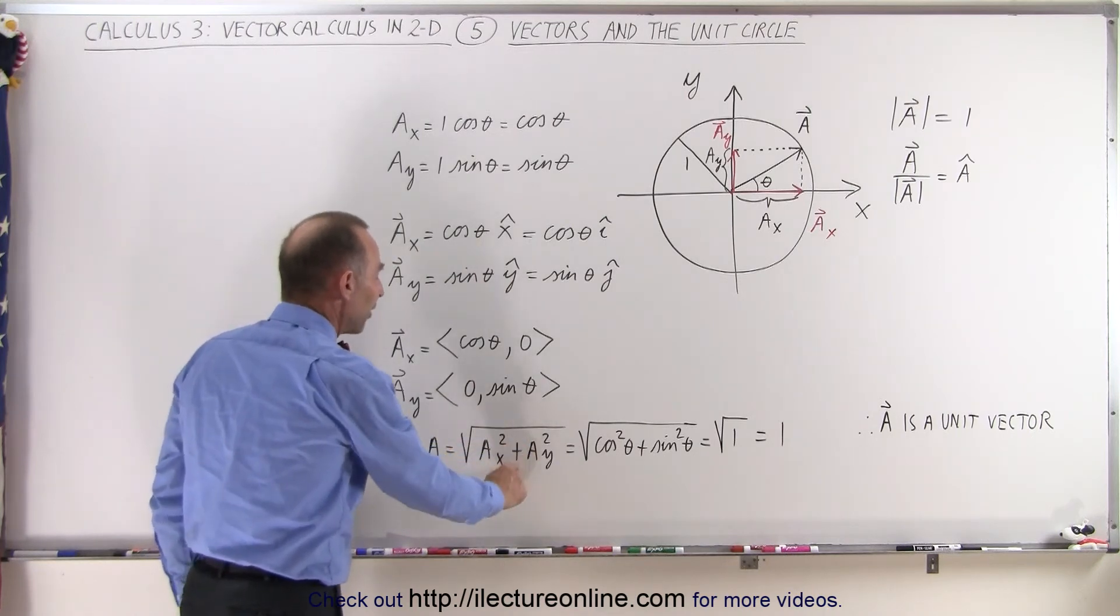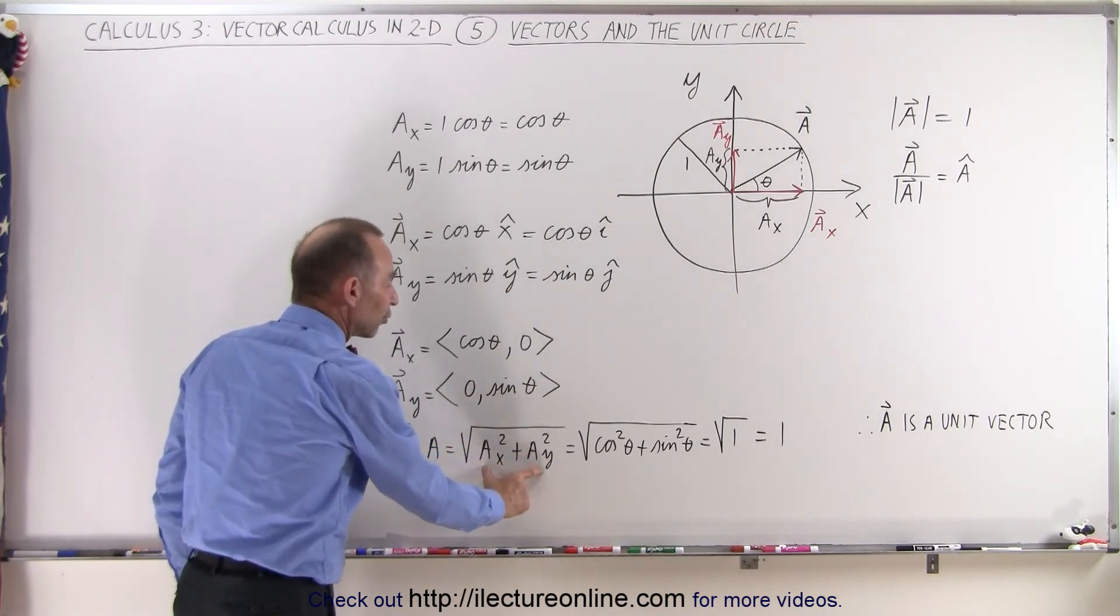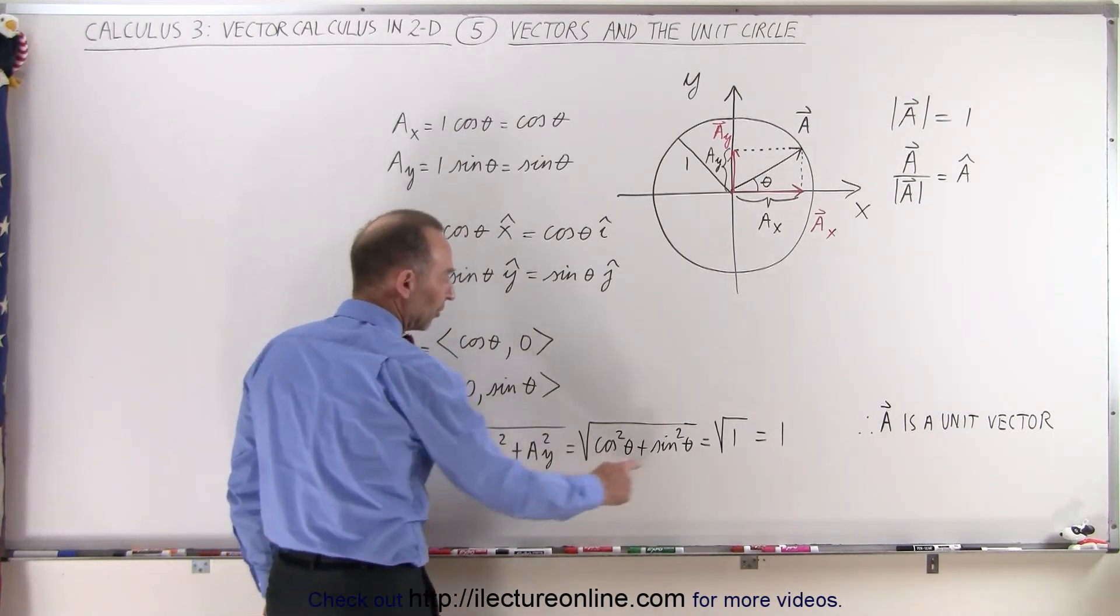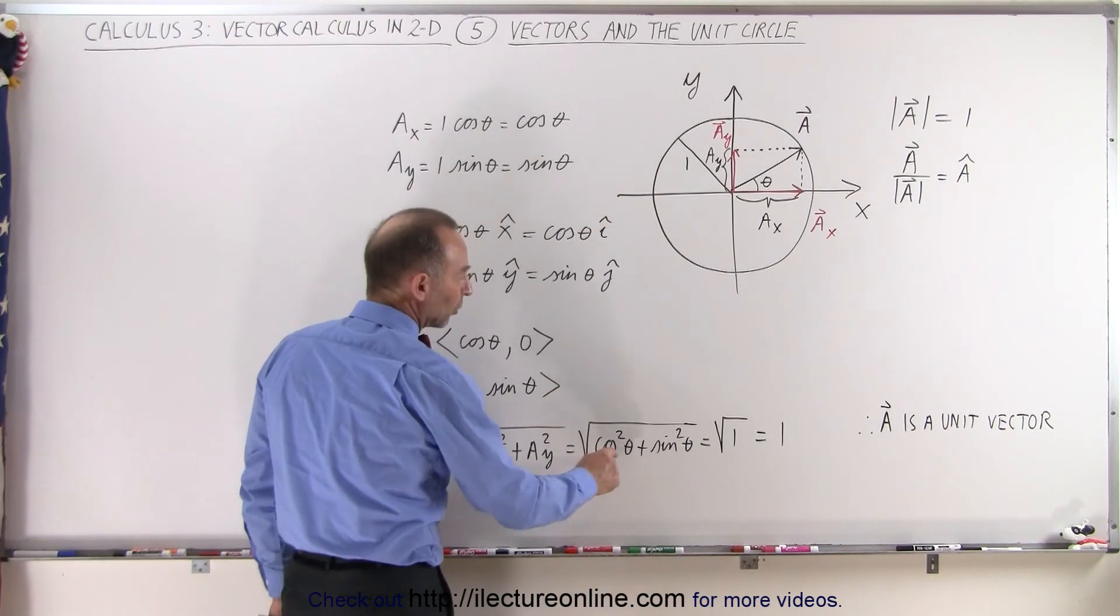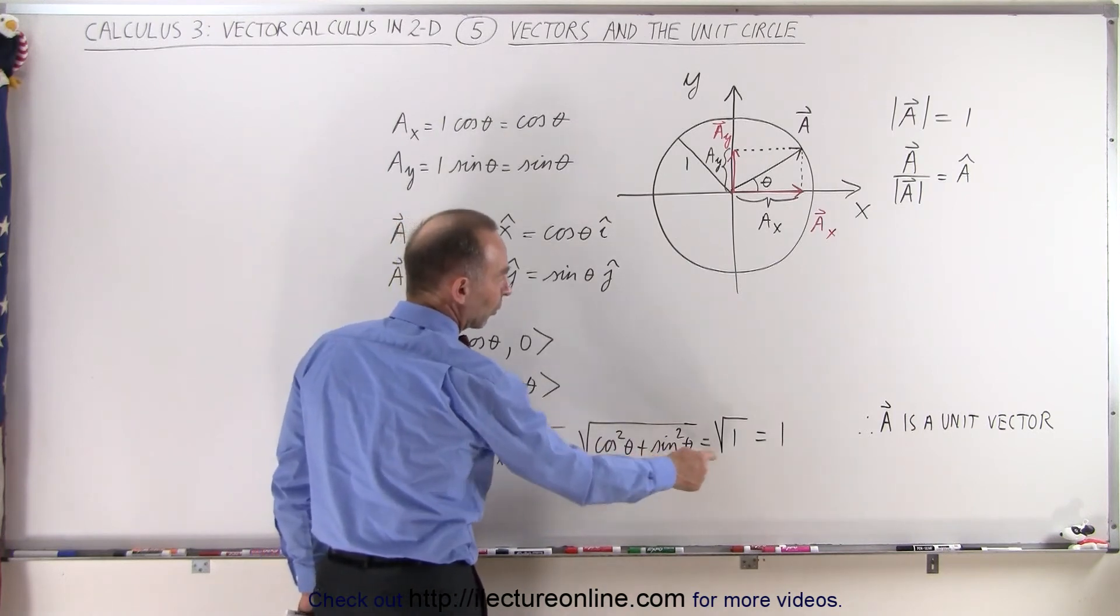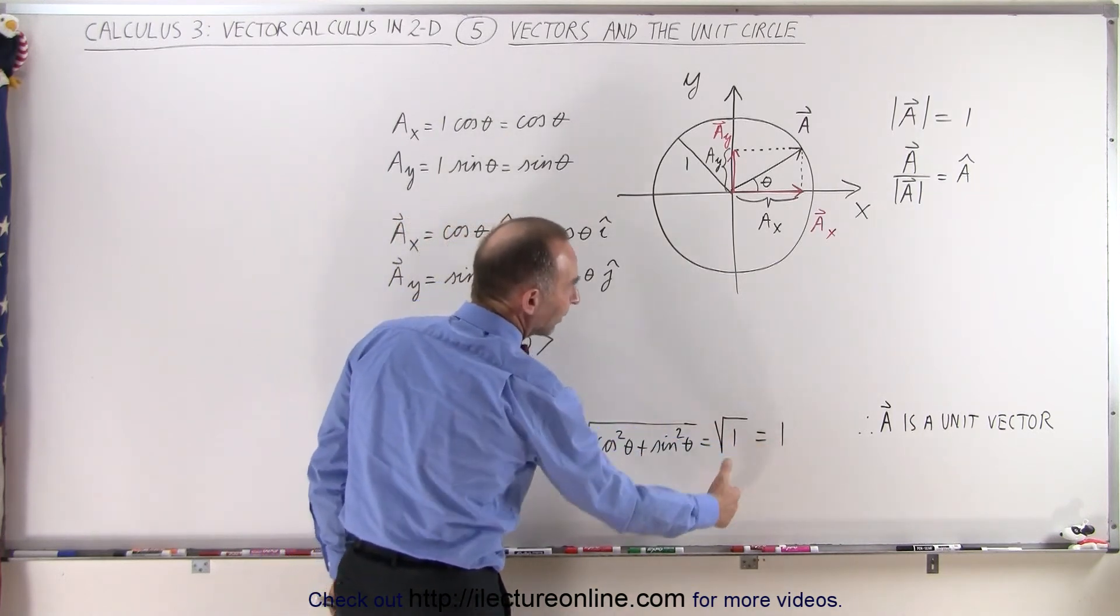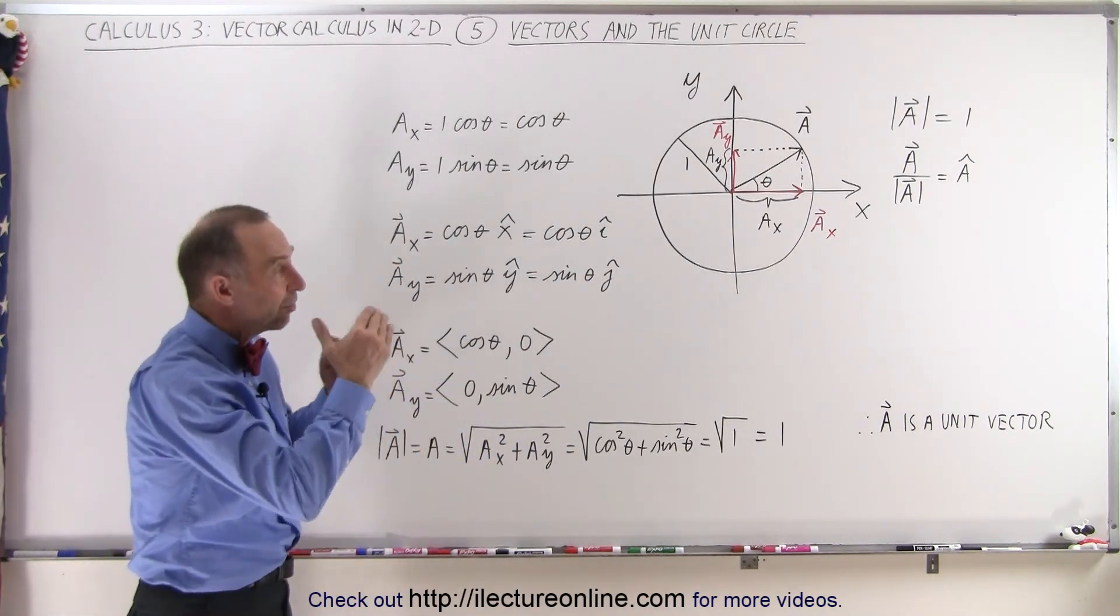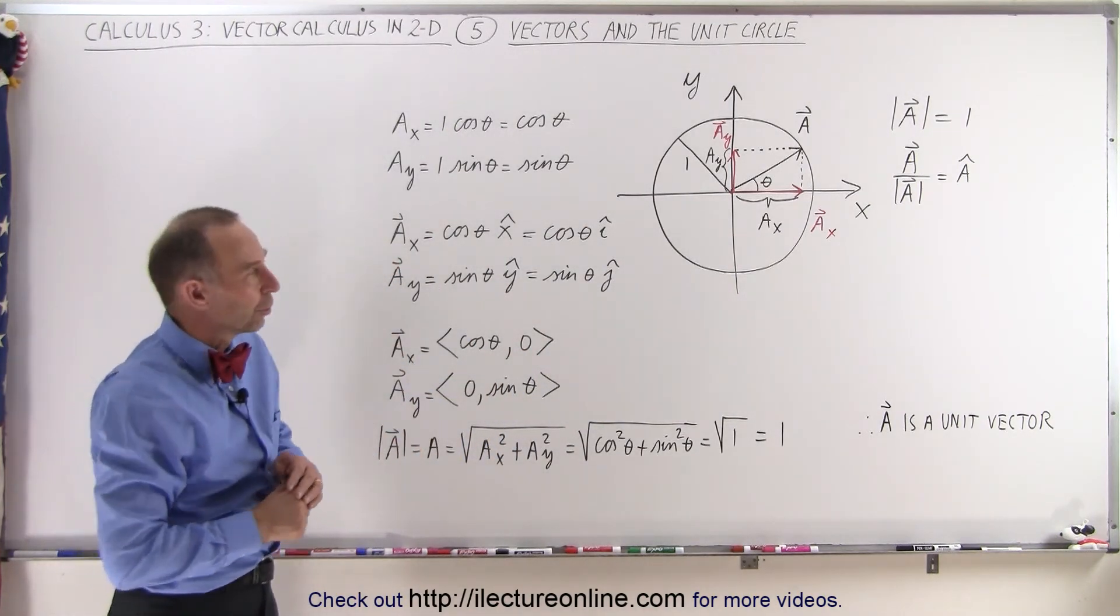And so since the x component is the cosine of theta and the y component is the sine of theta, you square those two: the cosine squared plus the sine squared is equal to one. The square root of one is equal to one, so therefore a can be considered a unit vector since its magnitude is equal to one.